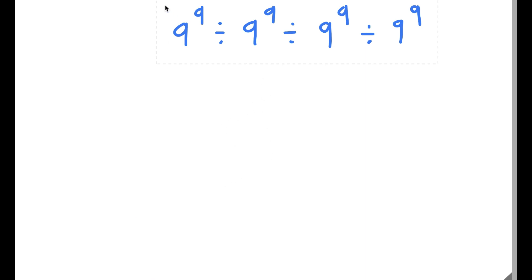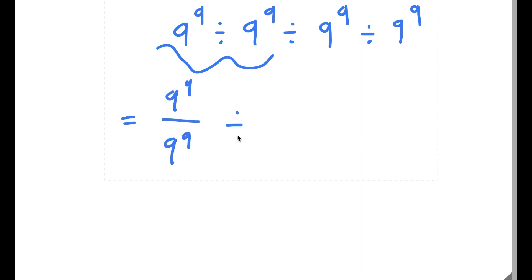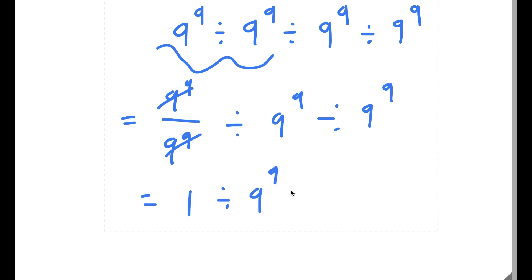So in this problem, I have 9 to the power of 9 divided by 9 to the power of 9, divided by 9 to the power of 9, divided by 9 to the power of 9. I'm going to simplify this in parts. First, 9 to the power of 9 divided by 9 to the power of 9 — anything divided by itself is 1 — so those cancel out, leaving 1 divided by 9 to the power of 9, divided by 9 to the power of 9. We have to go in order due to PEMDAS.